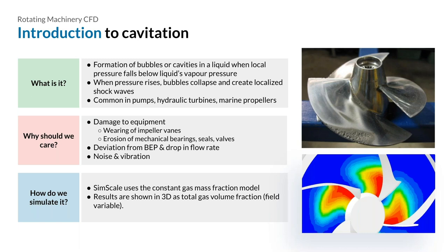We should care because those shockwaves can cause damage and erosion to parts, generate noise and vibration, and can reduce your pump's performance and flow rate. SimScale uses a constant gas mass fraction model to simulate cavitation, and the results are available as a total gas volume fraction which you can plot as a 3D field variable, shown as color contours on the right-hand side of the slide. Simulation can be used to guide early-stage product design and development to avoid or minimize the effects of cavitation. Ajit will now explain this in more detail with the live demo.